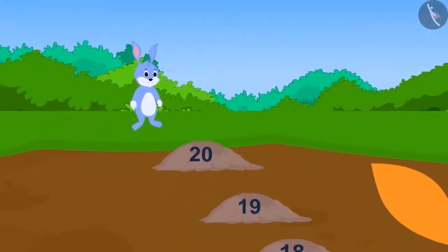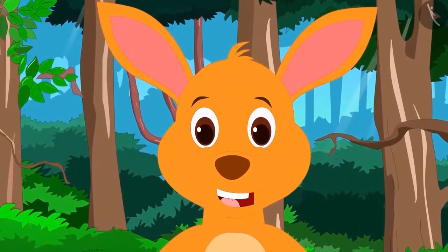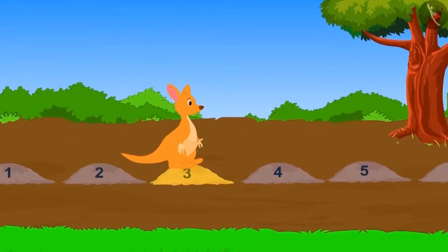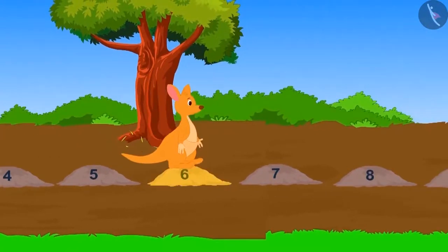Seeing bunny, now kittu kangaroo has also gathered courage. Kittu can take three steps in one jump. First, he took one jump and reached the third stone. Now, he took another jump, reached three steps ahead and further reached which step? On the sixth stone.